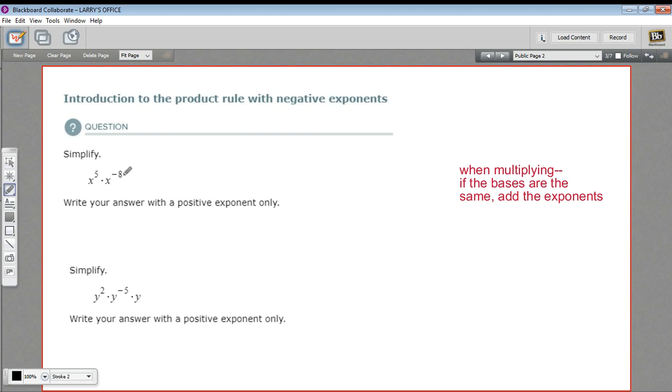The only tricky part here is that we have some negative exponents. But that shouldn't be too hard, it just means we need to add some negative numbers. So x to the fifth times x to the negative eighth would be x to the five plus a negative eight power.